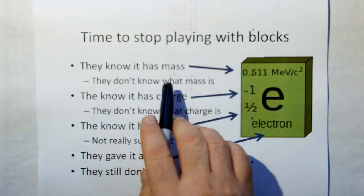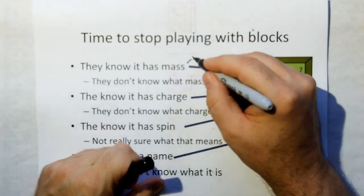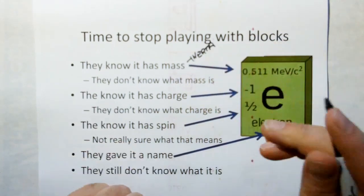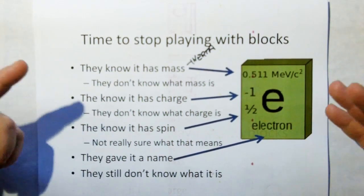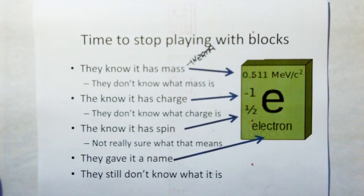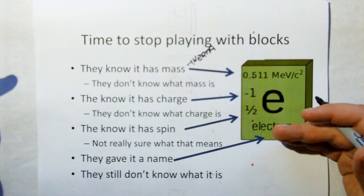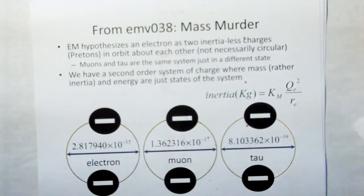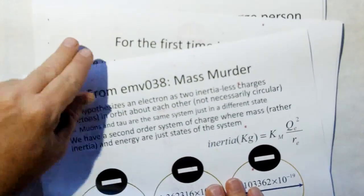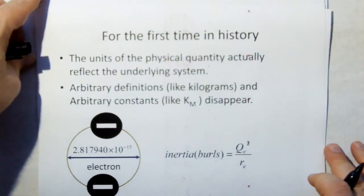And so scientists have to stop playing with blocks. They know an object has mass, which is really inertia. But they don't know what mass is. They know it has charge, but they don't know what charge is. They just have these scalar quantities that they float around in all the equations. They know it has spin. They're not really sure what spin is. They gave it a name. That doesn't mean they know anything.